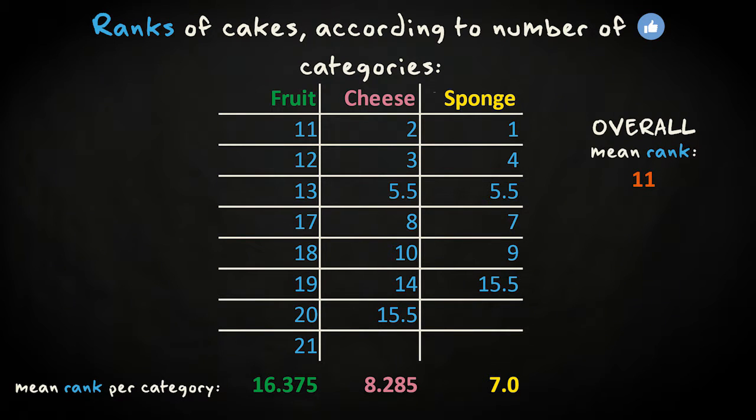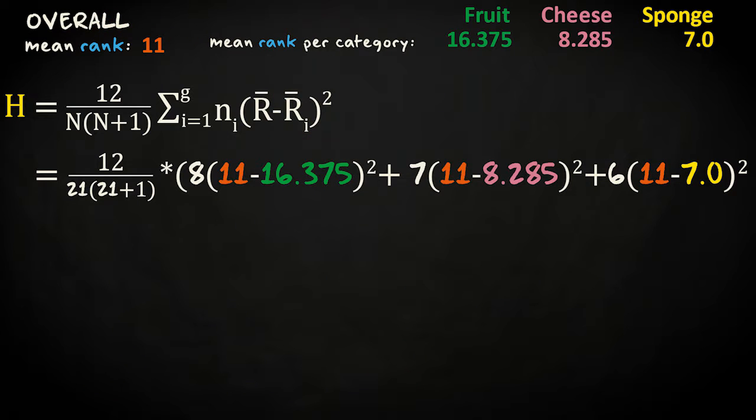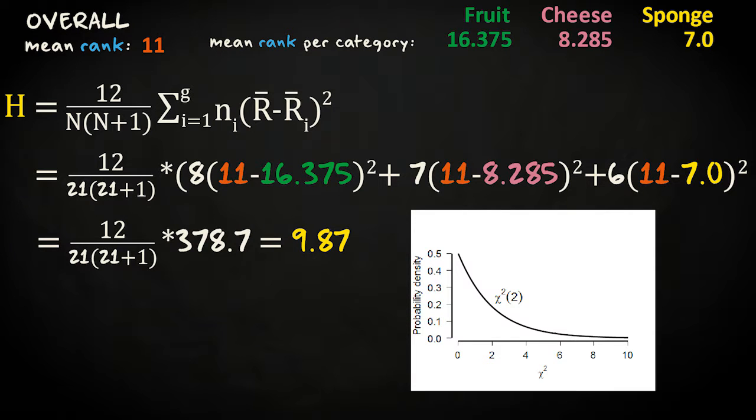These values are entered in the equation to calculate the Kruskal-Wallis statistic together with the size of each group and the overall group size of 21. This gives a value of 9.87 for the test statistic. Using a chi-square distribution with 2 degrees of freedom, this value corresponds to a p-value of 0.007. So the conclusion is that the different types of cakes are appreciated very differently.